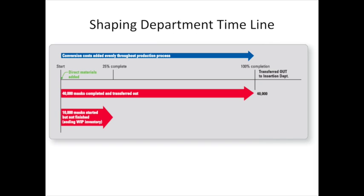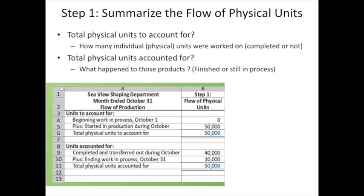Step one in the process costing scenario is to summarize the flow of physical units. The first thing in this step is to total our physical units to account for — how many individual units were worked on, completed or not? Then we have to show how we accounted for them: what happened to those products? Are they finished and transferred out, or are they still in our work in process inventory?